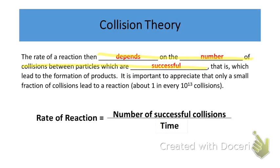To give some perspective: only a small fraction of collisions actually lead to a reaction — about one in 10 to the 13th collisions. That's not a whole lot, but reactants are moving quite fast so there are typically many collisions in a very short amount of time. The rate of reaction is really the number of successful collisions per unit time. The more successful and frequent the collisions, the faster the reaction.